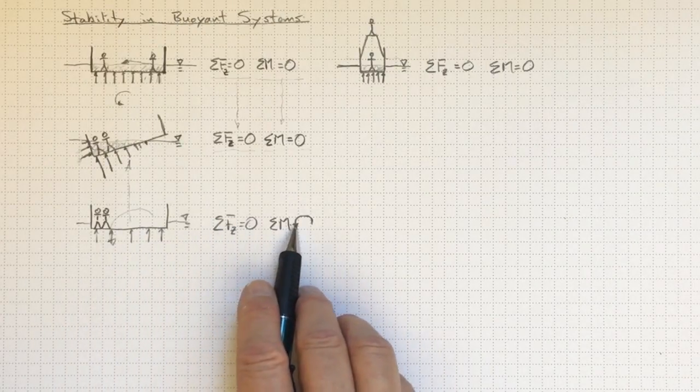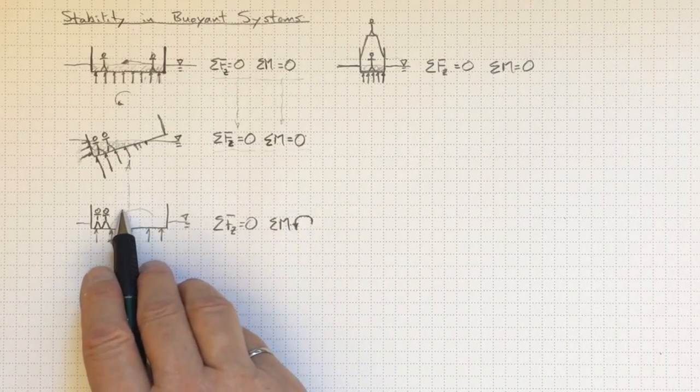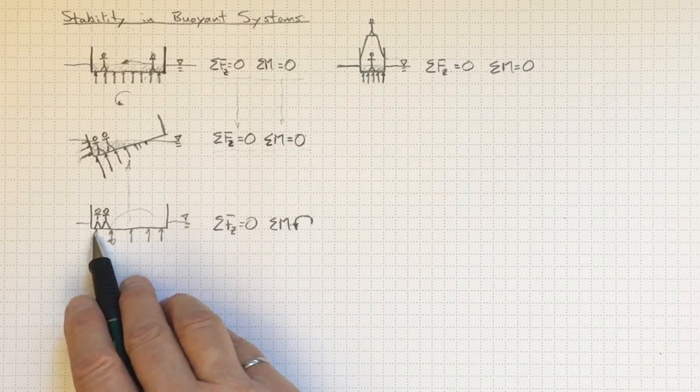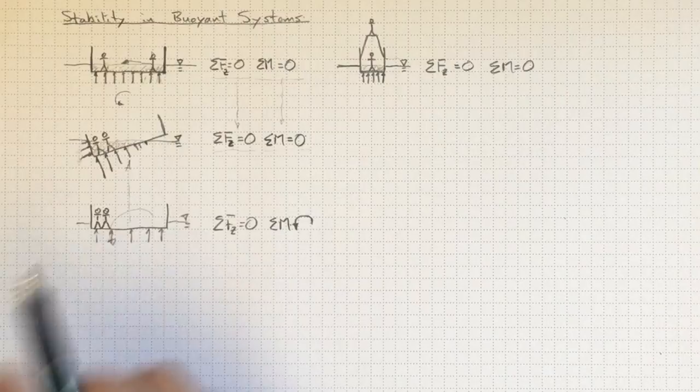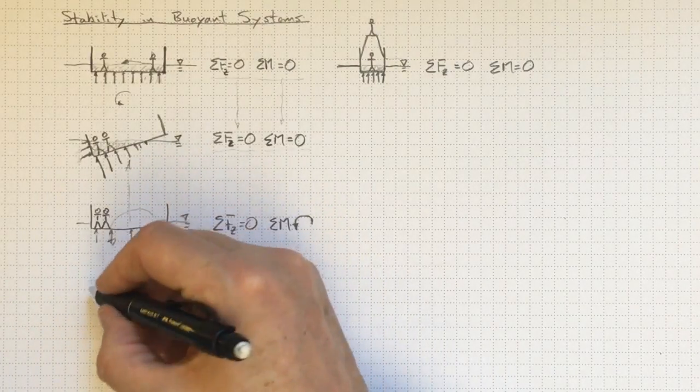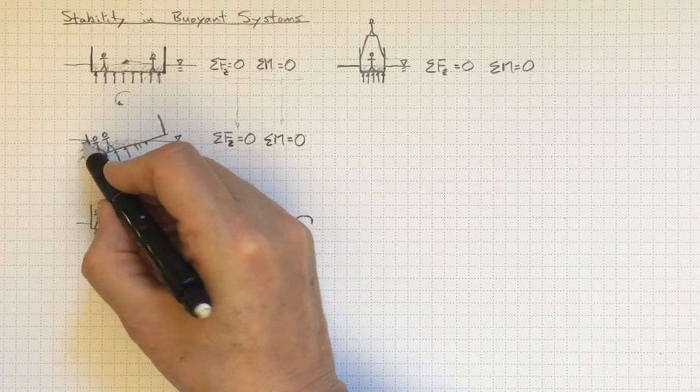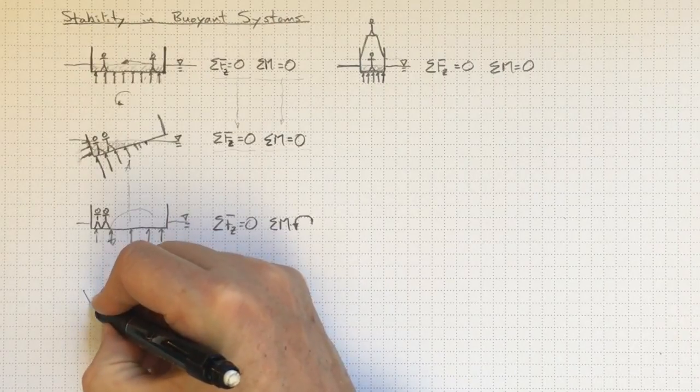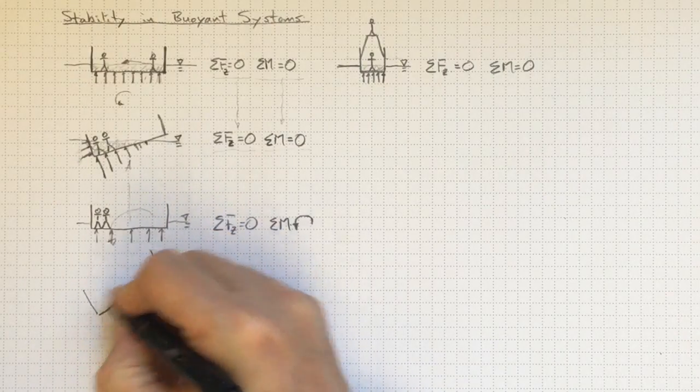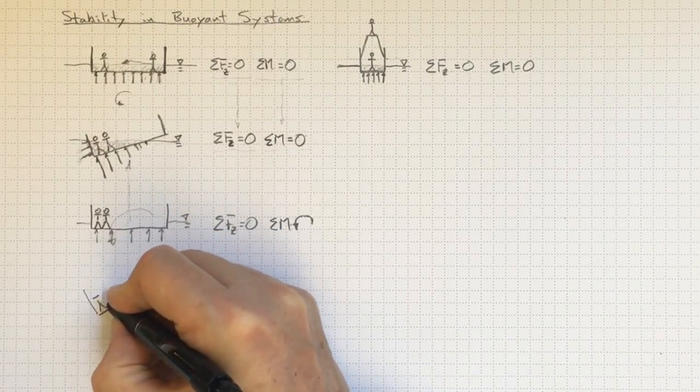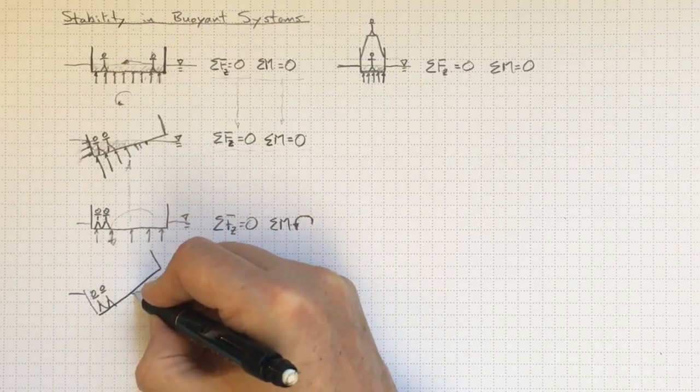So we've got an overturning moment. It has reached a point where it's going to cause the boat to rotate this way. But if the boat had rotated past this location a little more steeply, to this point.